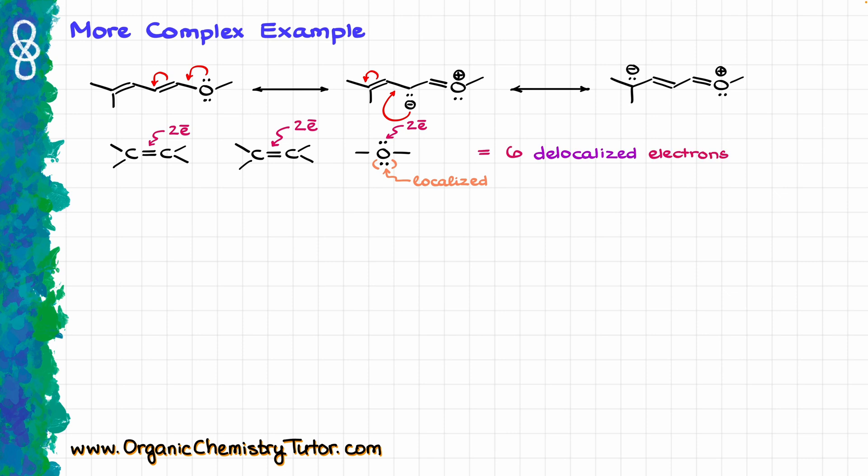The second electron pair on that oxygen was localized, so I'm not going to count those electrons as part of my delocalized system, giving a grand total of six delocalized electrons. Typically, when you have heteroatoms with multiple electron pairs — like oxygen with two, sulfur with two, or chlorine with three electron pairs — we are going to use just one electron pair in resonance, and the other electron pairs on that atom are going to be localized.